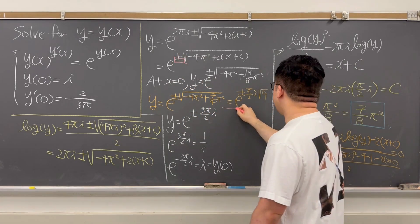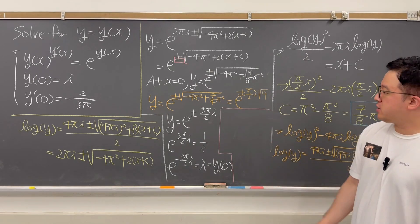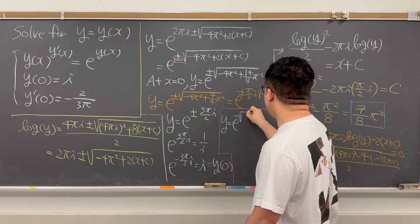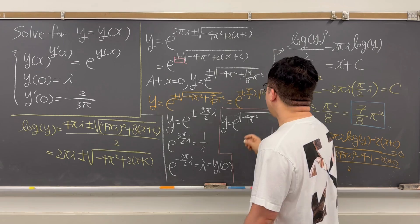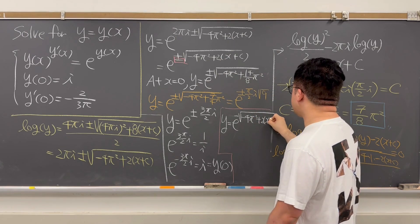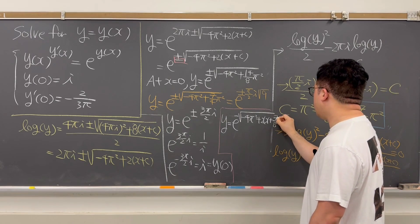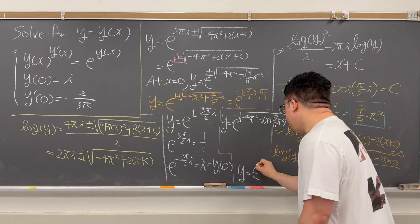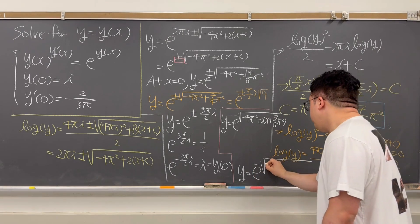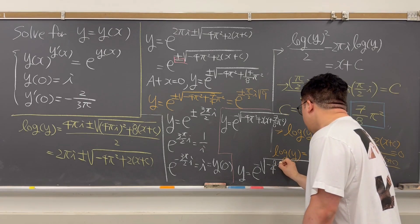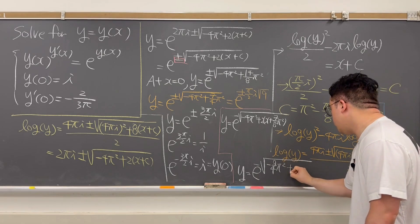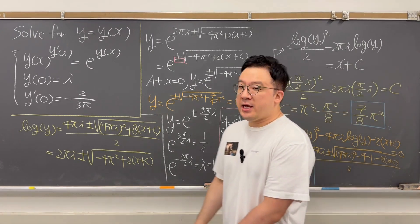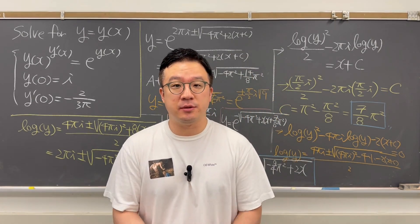The final answer is y = e^(−√(−4π² + 2x + 7π²/8)), which simplifies to y = e^(−√(−9π²/4 + 2x)). That's the solution to this challenging differential equation. Thanks for watching — I'll be back with more questions like this soon.